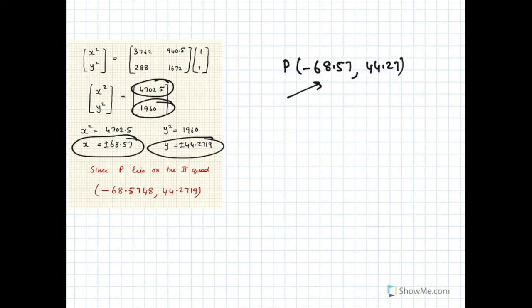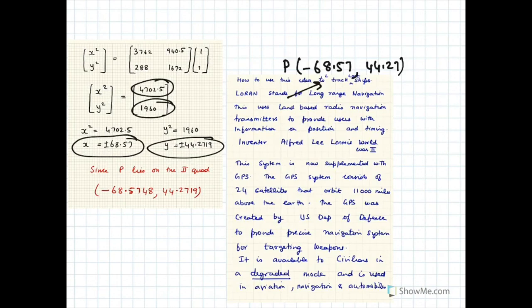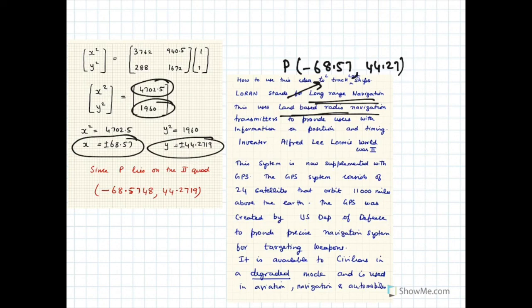P lies in the second quadrant — that's how we use the LORAN system to find the location of a ship very accurately. LORAN stands for Long Range Navigation and uses land-based radio navigation transmitters to provide position and timing. The inventor is Alfred Lee Loomis, during World War II. This system is now supplemented with GPS, which consists of 24 satellites orbiting 11,000 miles above the earth. GPS was created by the US Department of Defense and is available to civilians in degraded mode.